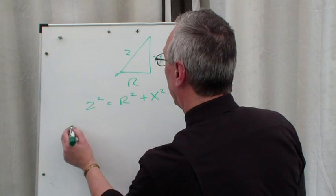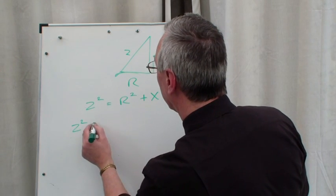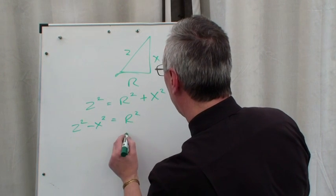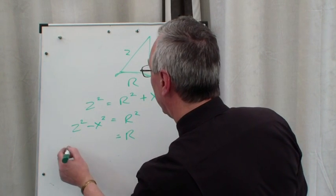z² - x² = r². r would equal the square root of z² - x².